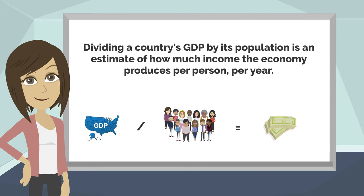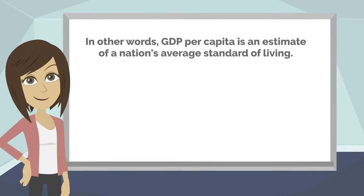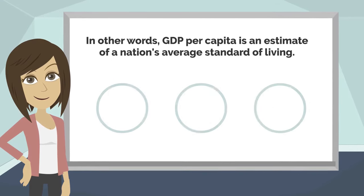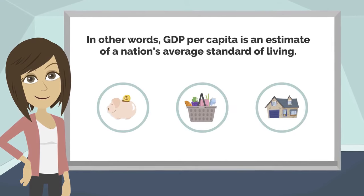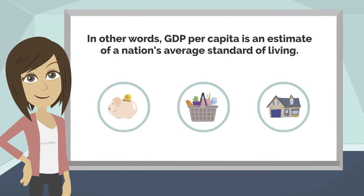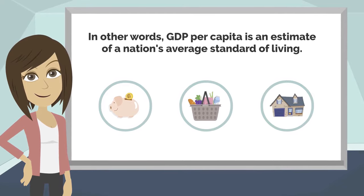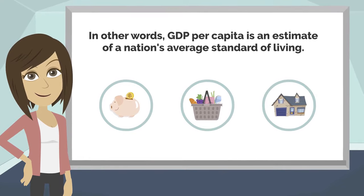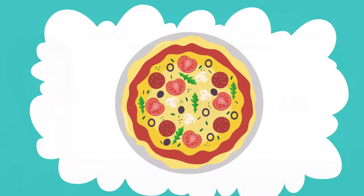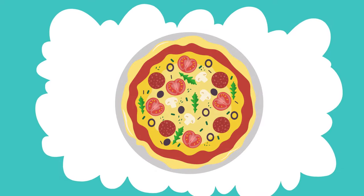That is, per capita, per year. In other words, GDP per capita is an estimate of a nation's average standard of living. Think about a pizza.